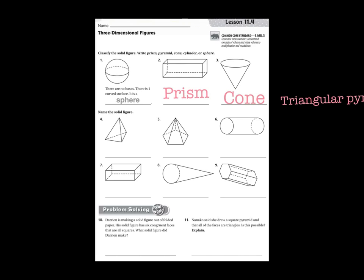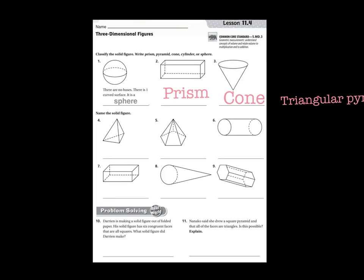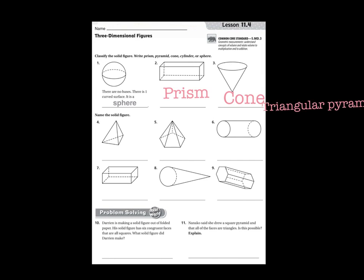And then let's name the solid figures. Let's do number four. The bottom of it, the base is a triangle. Therefore, it is a triangular pyramid. You may do the rest on your own. Work with a partner or I'll be on the carpet.